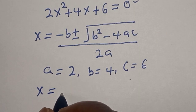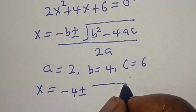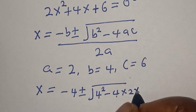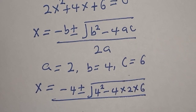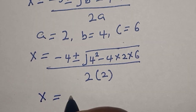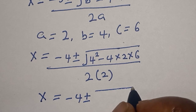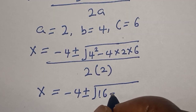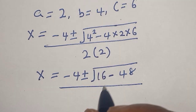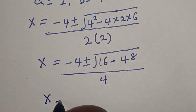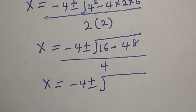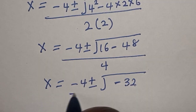x is equal to minus 4, plus or minus square root of 4 squared minus 4, multiplied by 2, multiplied by 6, divided by 2 multiplied by 2. So this is equal to 4. And x is equal to minus 4, plus or minus: 4 squared is 16, minus 48, divided by 2 times 2, that is 4. Then x is equal to minus 4, plus or minus square root of minus 32, over 4.